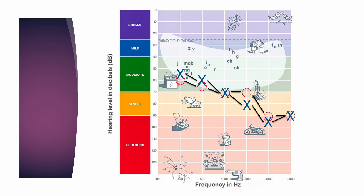Here is example number two. From top to bottom, soft sounds to loud sounds. From left to right, low pitches to high pitches. Circles represent the right ear; x's represent the left ear. This patient has what we call a moderately severe sloping to profound hearing loss bilaterally. This hearing loss falls below the speech banana. Without hearing aids, they do not have access to speech at all, relying heavily on visual cues to engage with their environment and likely struggling with anxiety around social engagements.